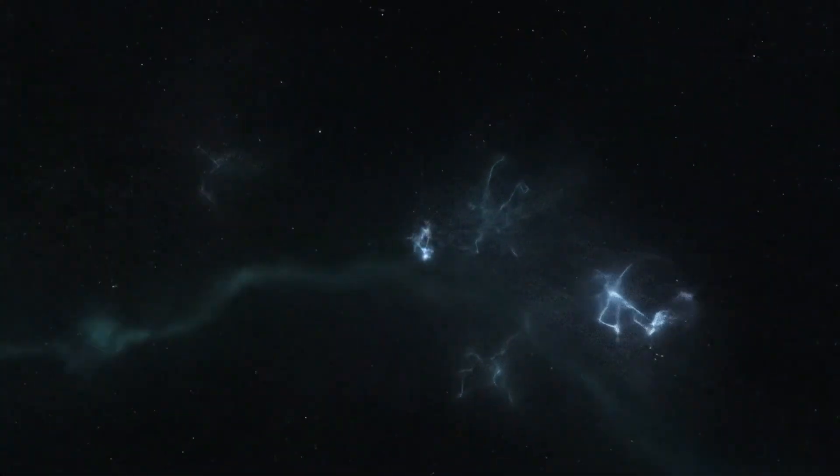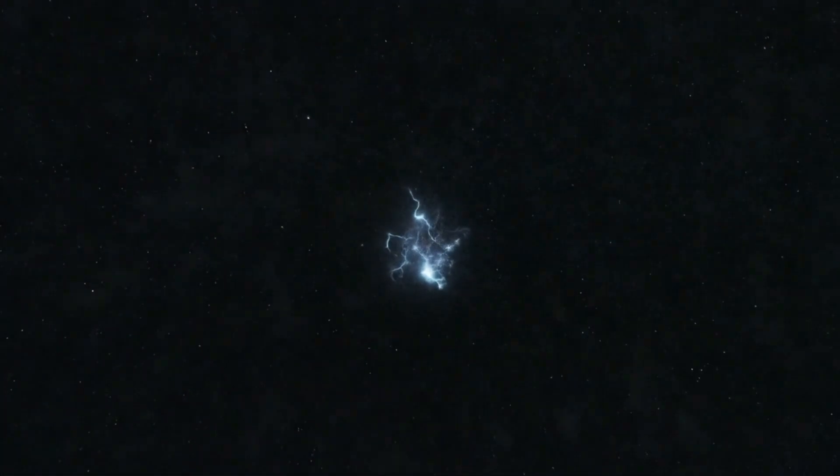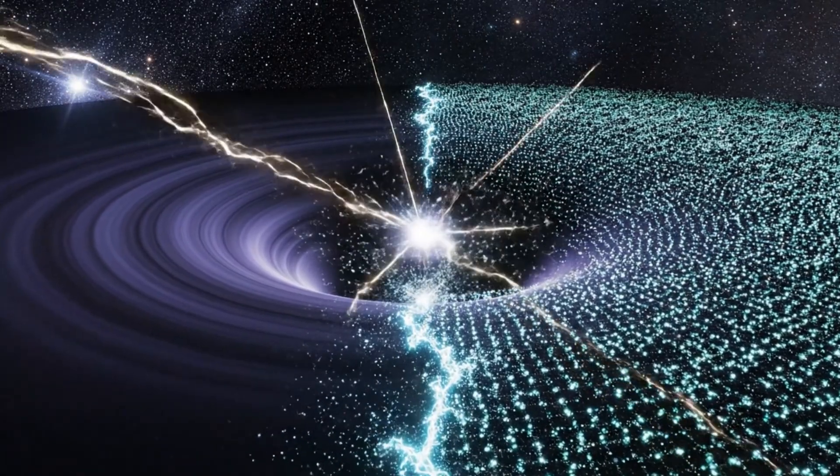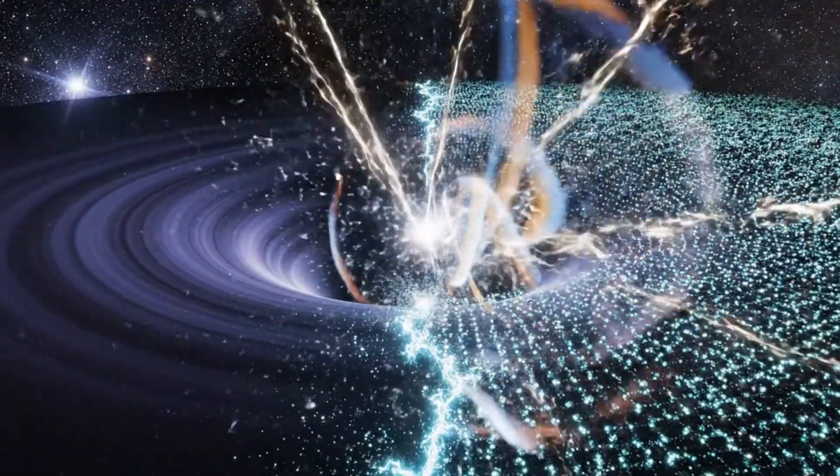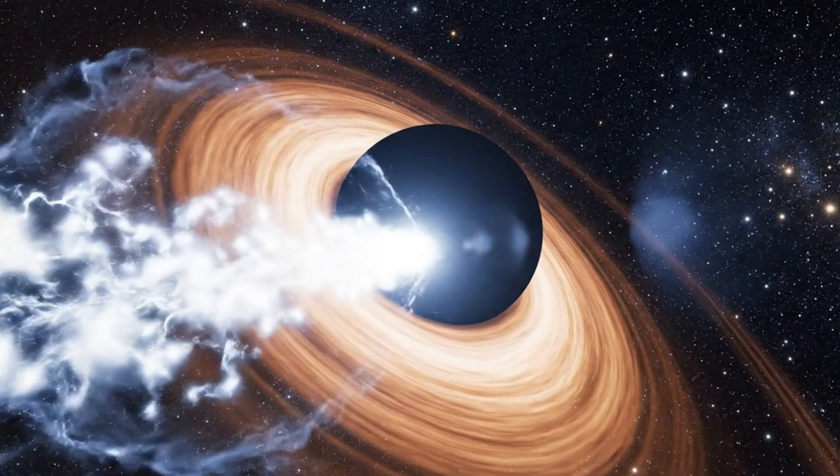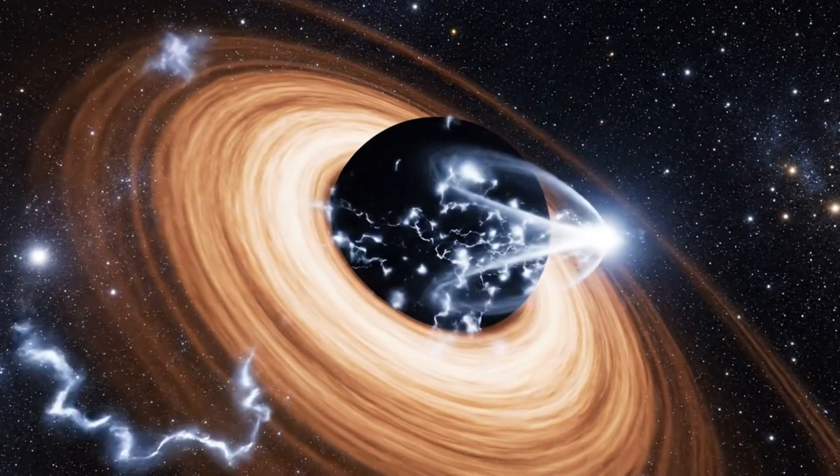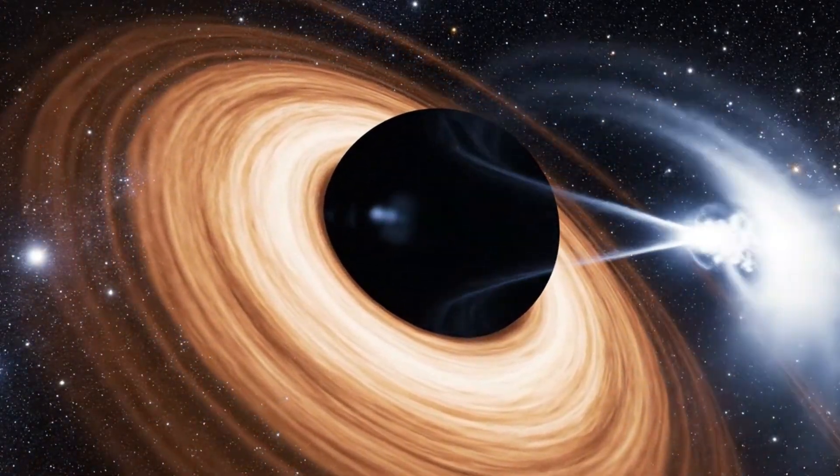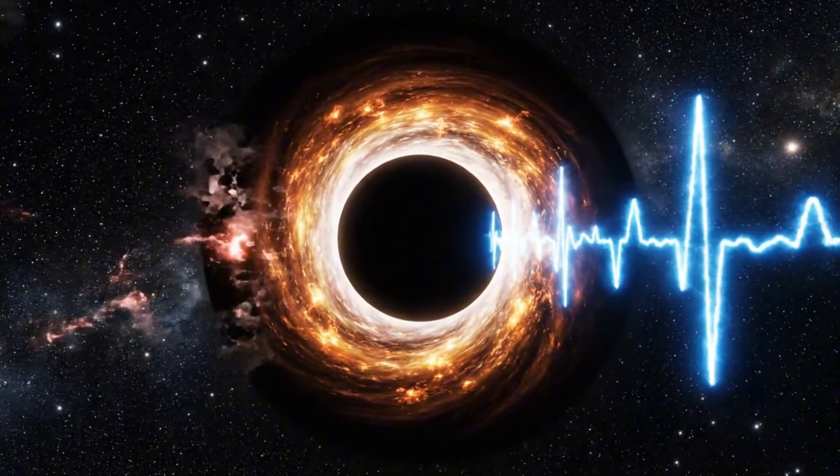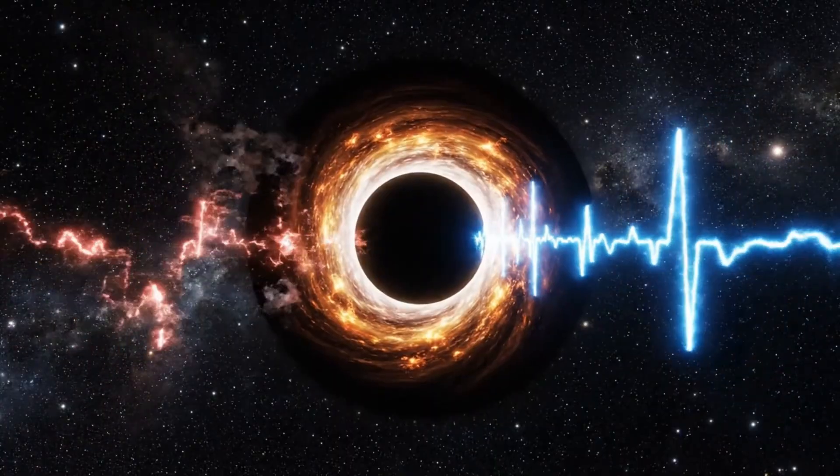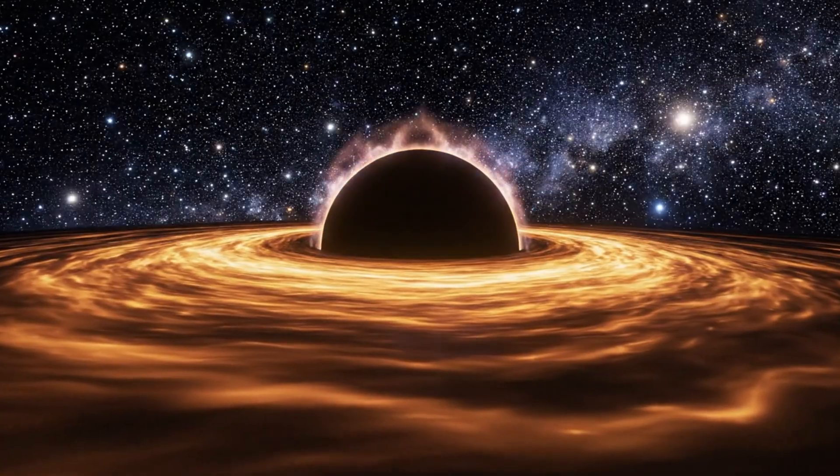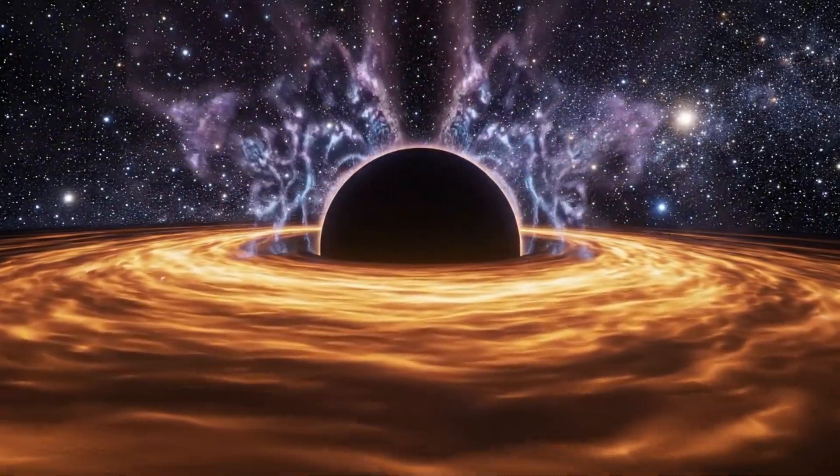TON 618 is a destroyer, yet it is also a historian of the universe, because the light it sends us is a relic from an age when galaxies were still learning how to exist. Every photon that reaches our telescopes carries the chemistry of the early cosmos and the blueprint of space at the moment the first structures began to rise from darkness. It reminds us that the universe was far more chaotic than we imagine today, and that monsters of this scale might have been common once before fading into the quiet of cosmic history.